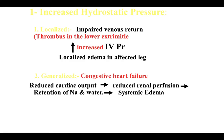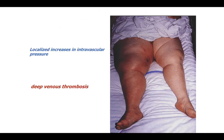Starting with increased hydrostatic pressure: if the cause is localized — for example, impaired venous return due to thrombosis in the lower extremity — the thrombosis causes increased blood accumulation inside the blood vessels, leading to increased intravascular pressure. This increased pressure causes localized edema in the affected leg. As shown in the diagram, obstruction due to thrombosis causes accumulation of blood inside the vein, resulting in localized edema.